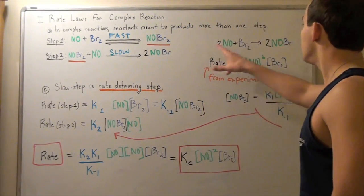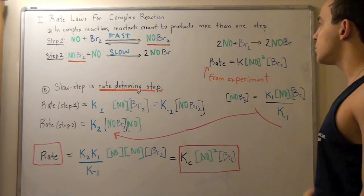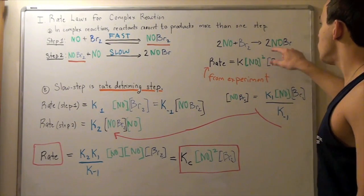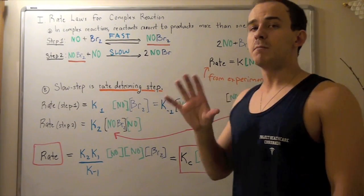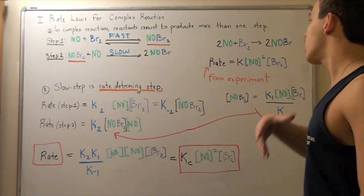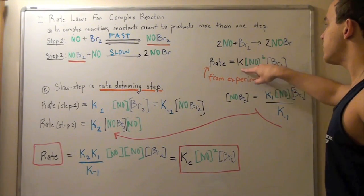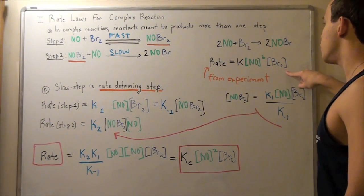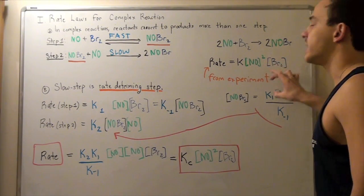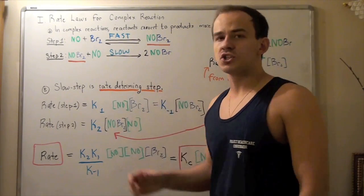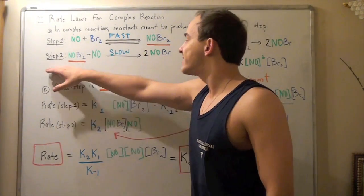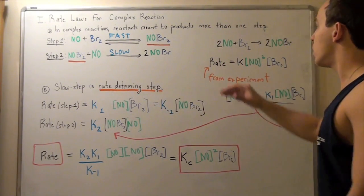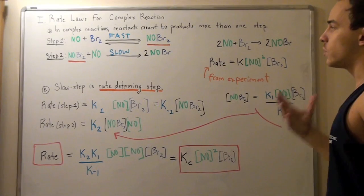Let's look at the following complex reaction in which two NO molecules react with one Br2 molecule to produce two moles of NOBr molecules. From experimental results, we find that our rate law is K times the concentration of NO squared times the concentration of Br2. Our goal in this lecture will be to find the rate law using the second step, the slow step, and compare it to our experimental rate law to see if they coincide.